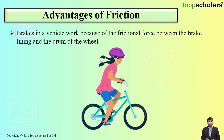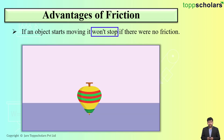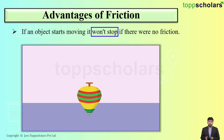Another advantage of friction is that if an object starts moving, it won't stop if there is no friction. For example, can you see a top spinning? If there is no friction on the ground, the top will spin throughout its life. So, for the stopping of a body, friction is mandatory.